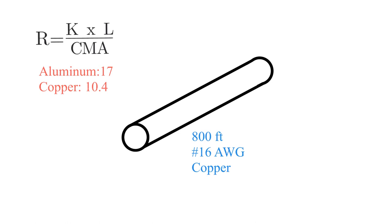So as an example, say this conductor here was 800 feet long of number 16 AWG copper conductor. So we have the length. We have our K because we know it's copper, so we'll be using 10.4. We don't have the CMA.